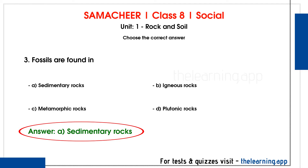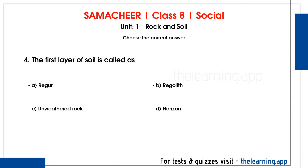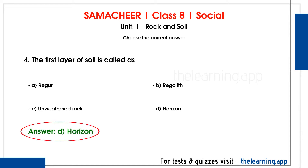Fourth question: The first layer of soil is called as dash. Options are A. Regular, B. Regular, C. Weathered rock, D. Horizon. Correct answer is option D, Horizon. There are six layers of soil. The first layer of soil is called Horizon.